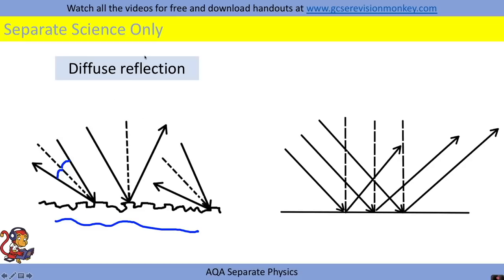So this one's called diffuse reflection and this image over here shows specular reflection which happens on a smooth surface. Again all of the rays of light obey the law of reflection but they're all being reflected at the same angle and this is called specular reflection and this will give us a really clear reflection.